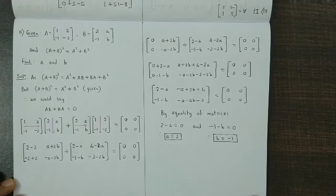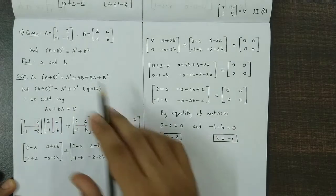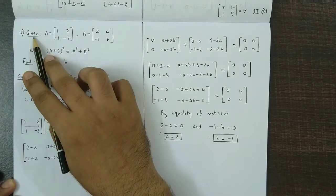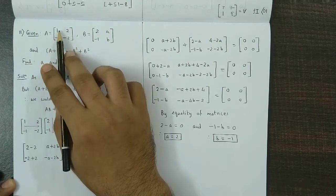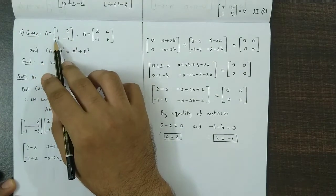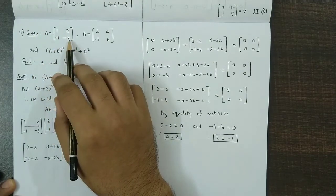We now discuss question number 11 from Excel 2.3. We have been given matrix A with elements 1, 2, minus 1, minus 2.